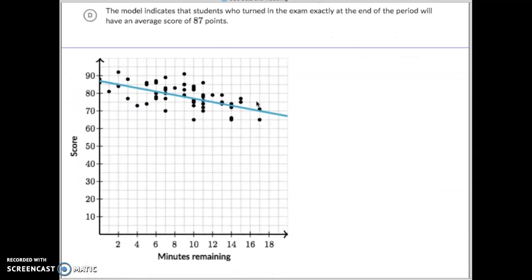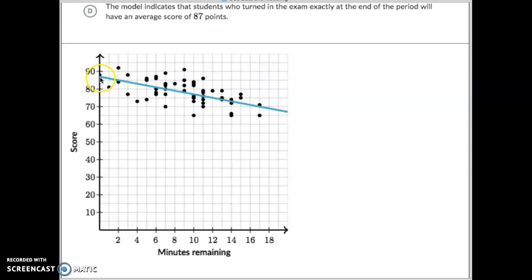So here's our graph, okay? 87 is our y-intercept right here, okay? So this is where the y-intercept is at 87. That represents the score. So students would score an average score right here of 87.